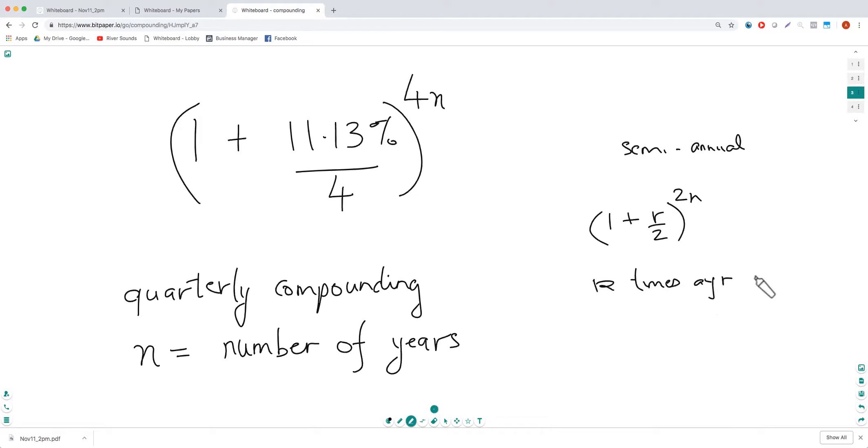then the formula would be 1 plus r by k power kn. And of course, if it's just annual, then the formula will be 1 plus r power once, that's 1 plus r.